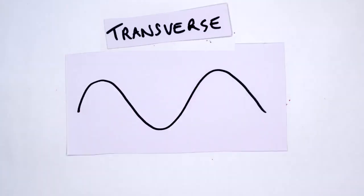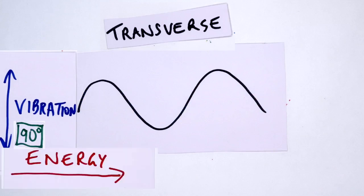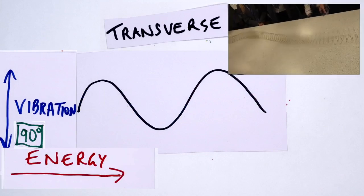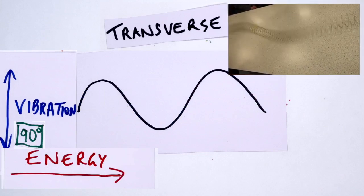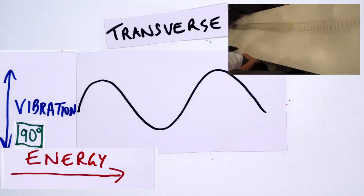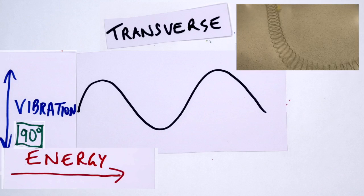There are seven electromagnetic waves and they are all transverse waves, which means they go up and down. Transverse waves have vibrations that are at 90 degrees to the direction that their energy travels. Examples of a transverse wave are a slinky spring, so this is a transverse wave, and water waves.